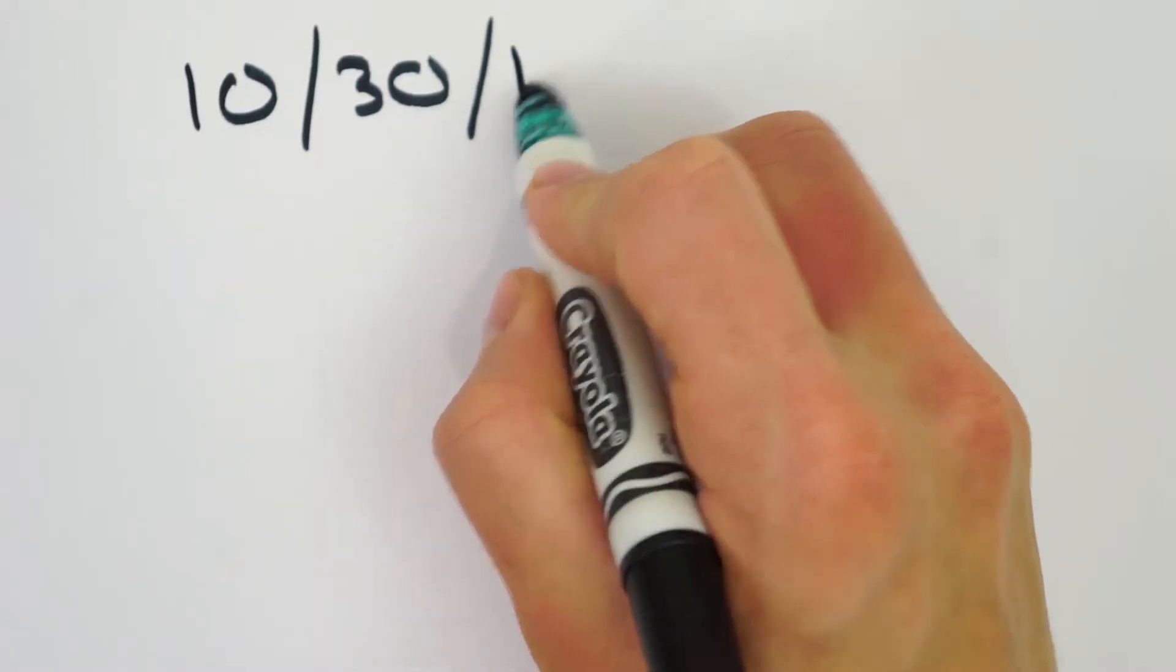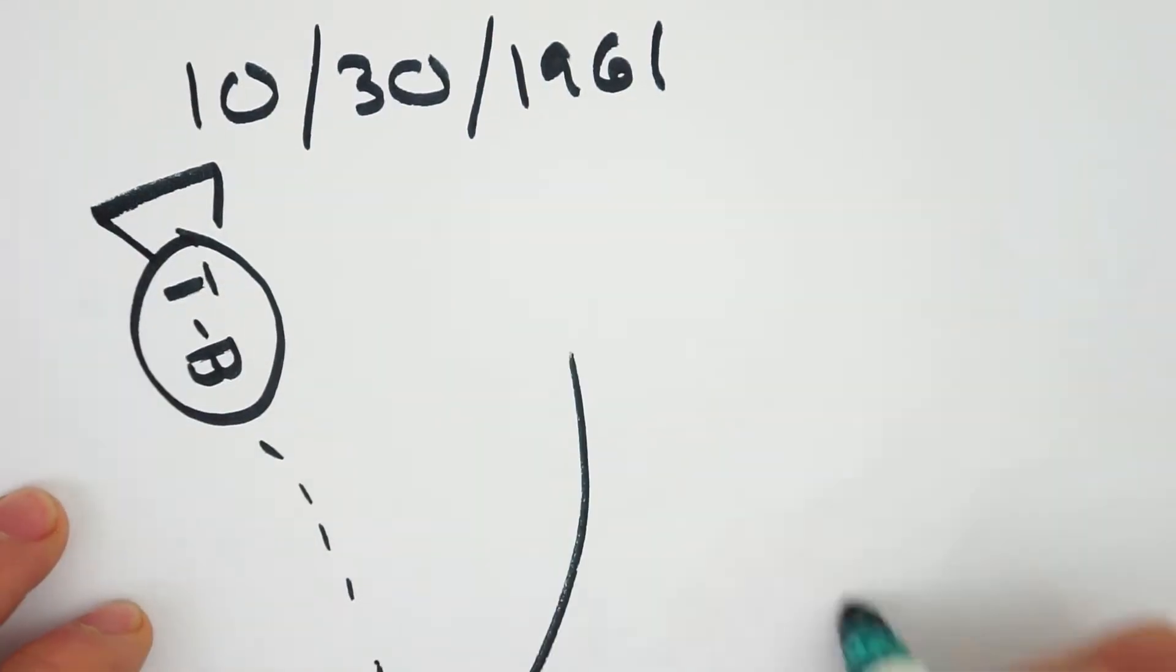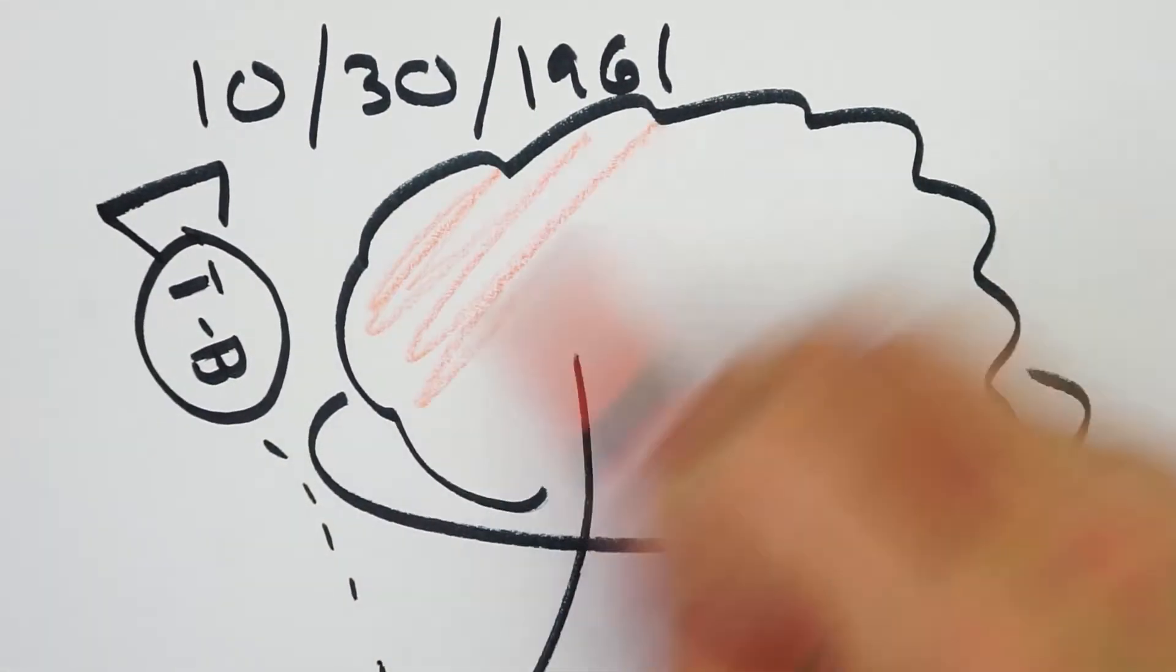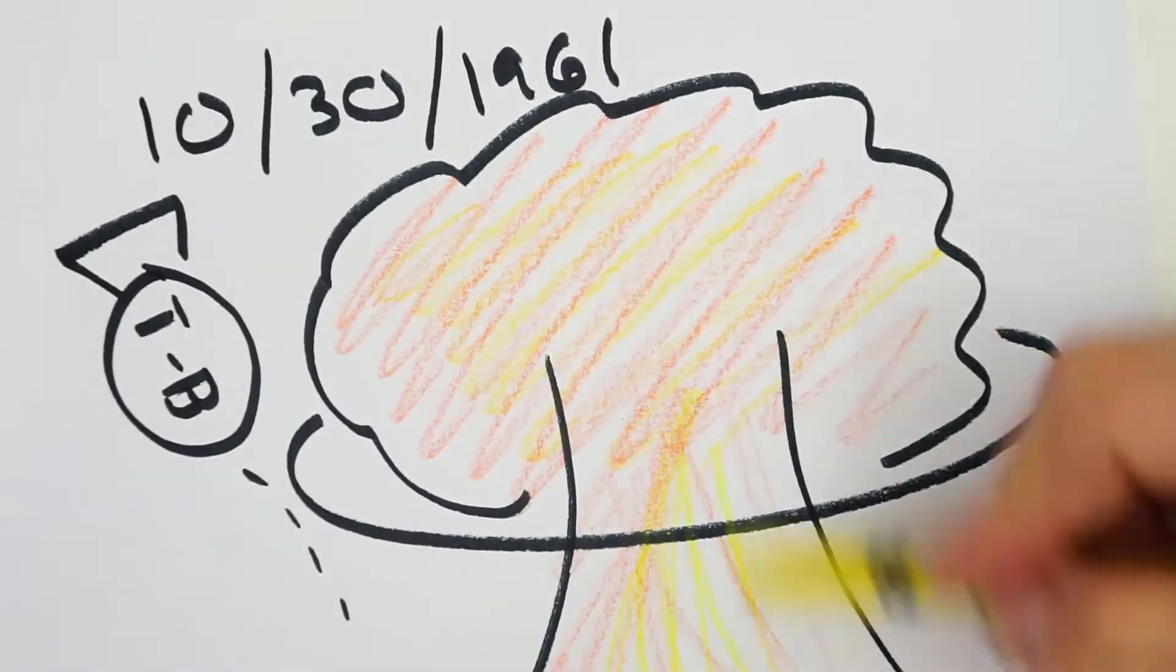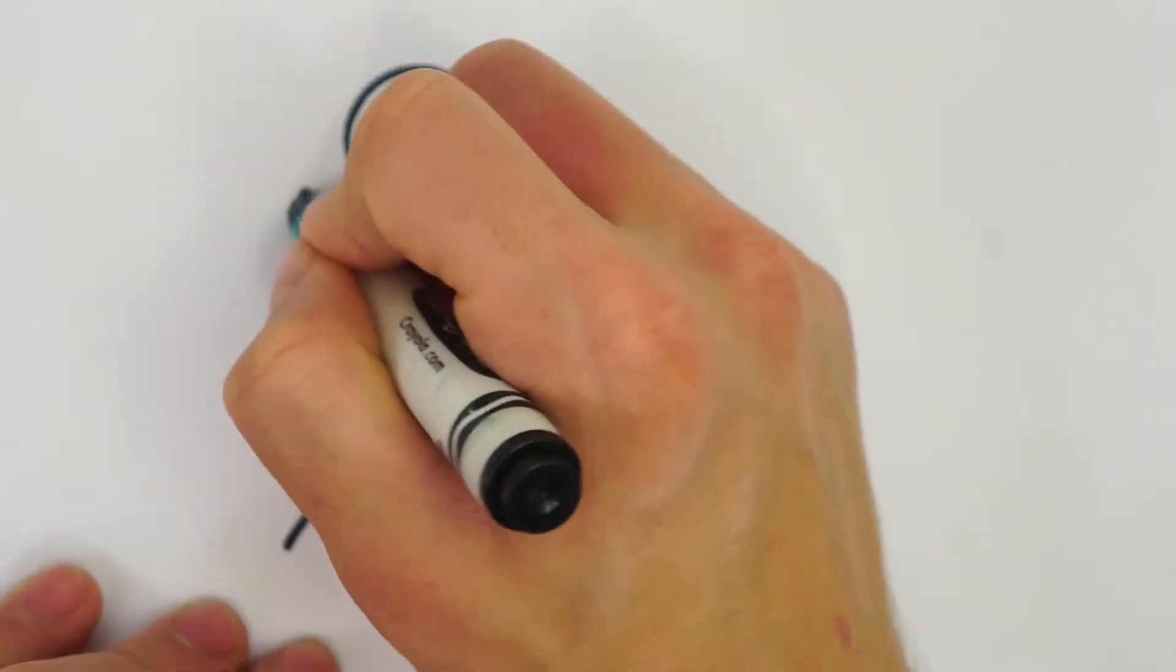When dropped on October 30th of 1961, the Tsar Bomba yielded an insane 58 megatons, making it the largest thermonuclear weapon ever created and detonated to this day. Its mushroom cloud reached 40 miles high.